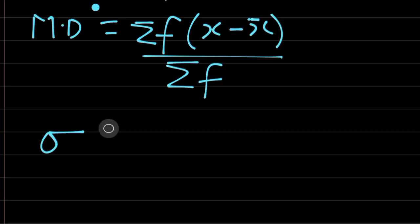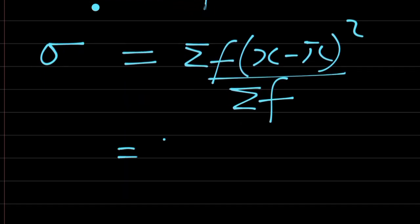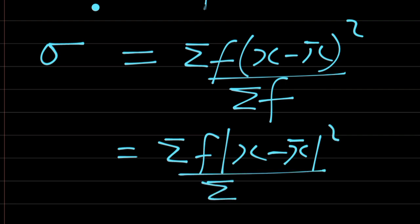Let's say this is variance. It is equal to summation of f into bracket x minus x bar squared over summation of f. Actually most times it is written like this: summation of f bar x minus x bar squared over summation of f. This is just to show you that the two bars represent the modulus. It simply means you ignore the negative sign.